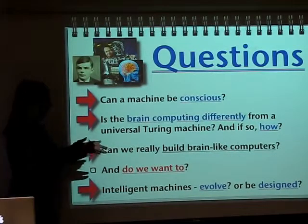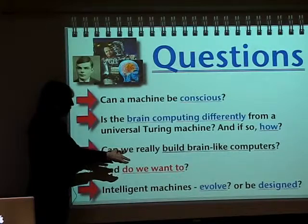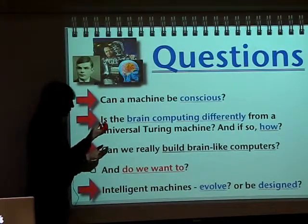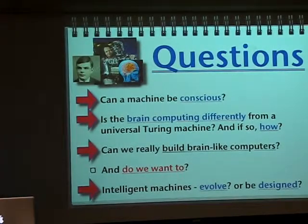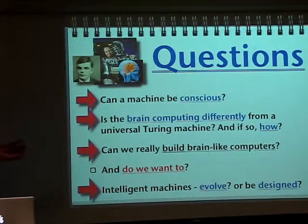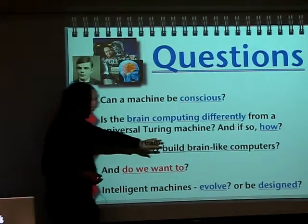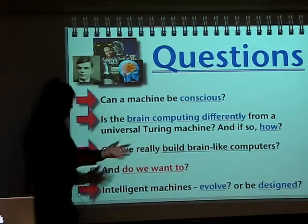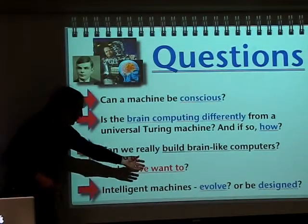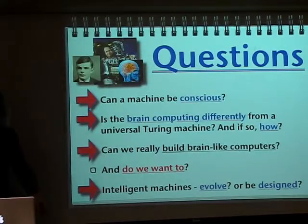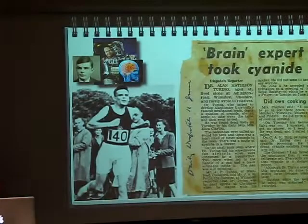People talk about the singularity where the computers take over. But if they're anything like humans, they're going to be like criminal computers — there's going to be computers which go mad. We want to keep these things under control. There's a whole area of computer ethics, of course. Intelligent machines: do we evolve them or design them? The jury's out on that.